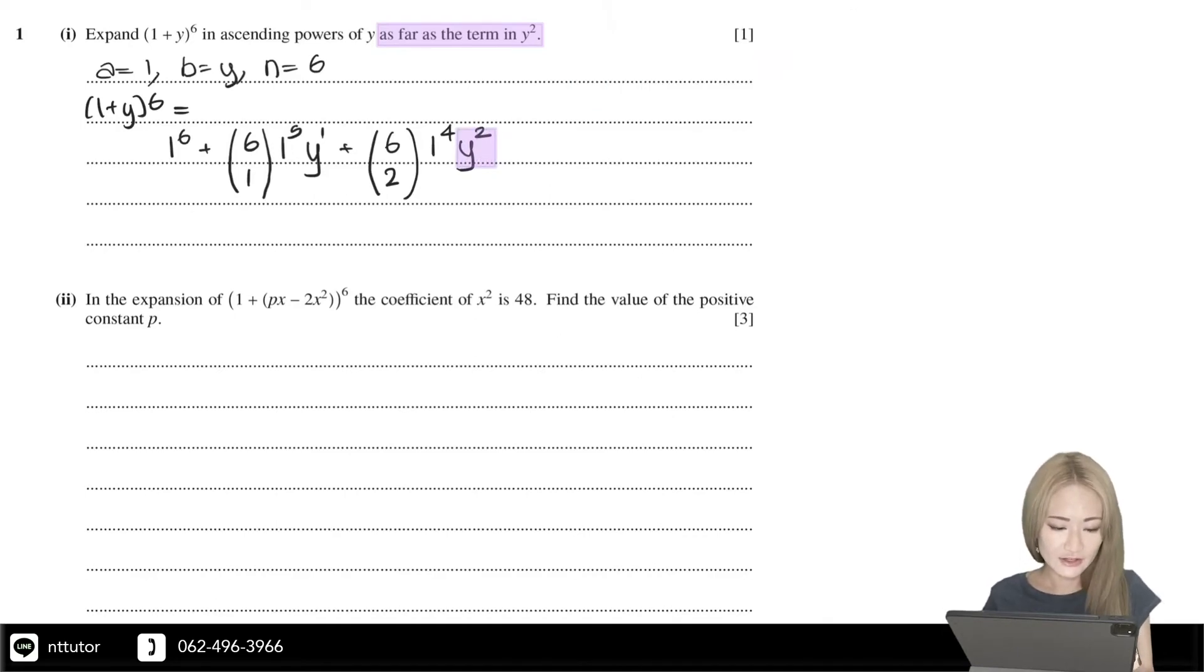Just type this into the calculator and we should get 1 + 6y + 15y². Technically the expansion should go on, but the question wants you to stop at y².